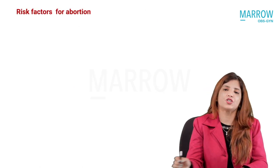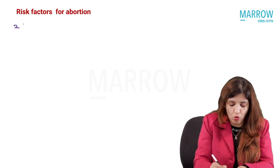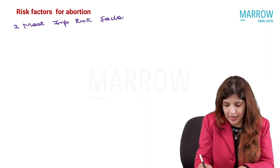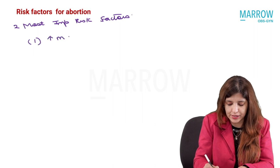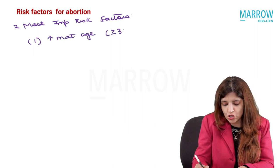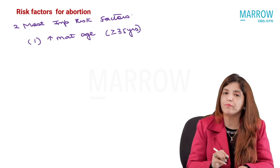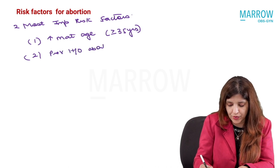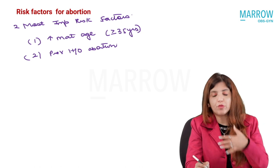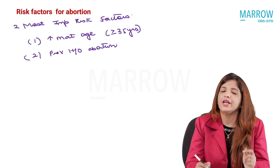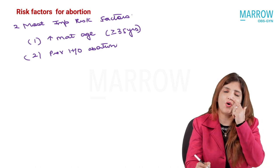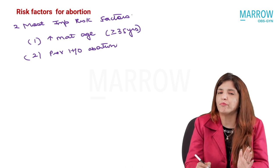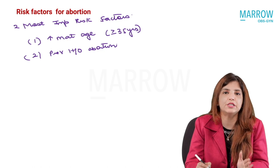What are the risk factors for abortion? The two most important risk factors: number one, increased maternal age — if mother's age is greater than or equal to 35 years, that is a very important risk factor for abortion. Number two, any previous history of abortion. Whenever a patient comes to you with abortion, it is very important that you take history of any previous such incident. Previous history of abortion is a very important risk factor for abortion in the present pregnancy.